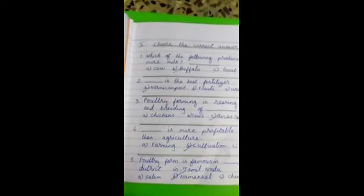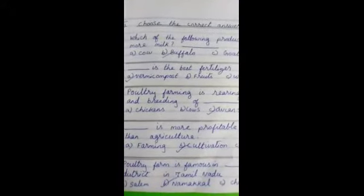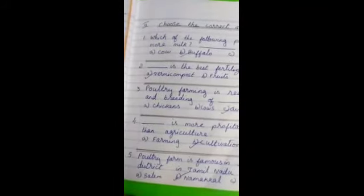And fourth one, dash is more portable than agriculture. Farming, cultivation, cow. Put that tick in B option.